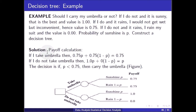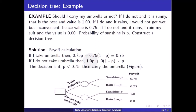The expected value calculation: if I take the umbrella, then E = 0.75·p + 0.75·(1 − p) = 0.75. If I do not take the umbrella, then E = 1.0·p + 0·(1 − p) = p. So the decision is: if p is less than 0.75, carry the umbrella.